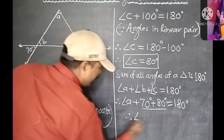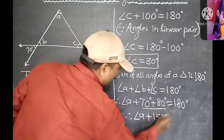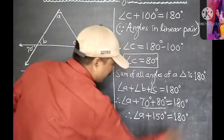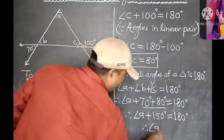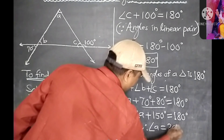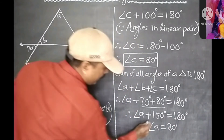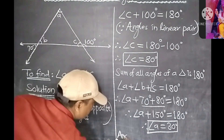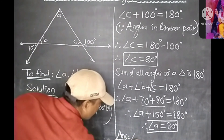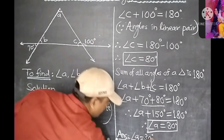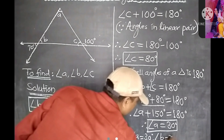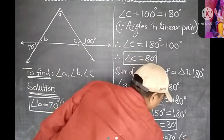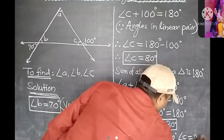Therefore, Angle A plus 150 degrees is equal to 180 degrees. Therefore, Angle A is equal to 30 degrees. So the final answers are: Angle A is equal to 30 degrees, Angle B is equal to 70 degrees, and Angle C is equal to 80 degrees.